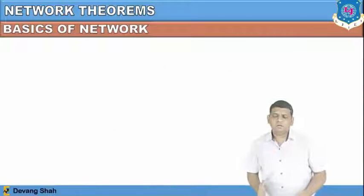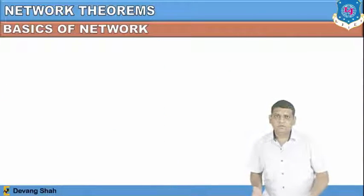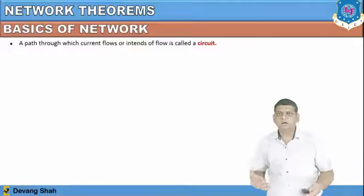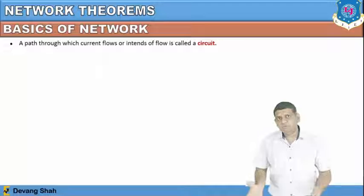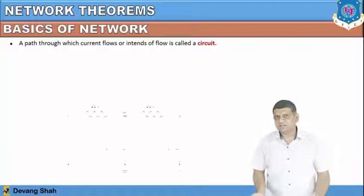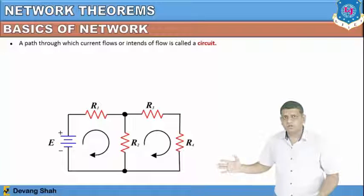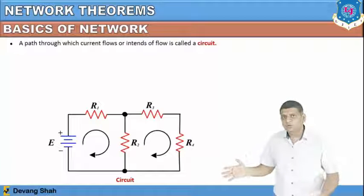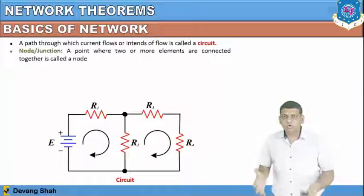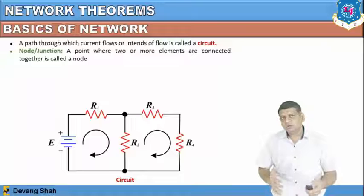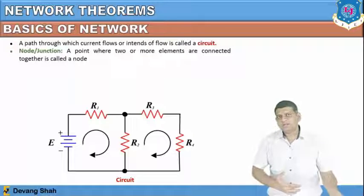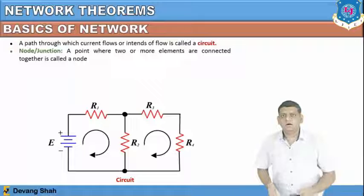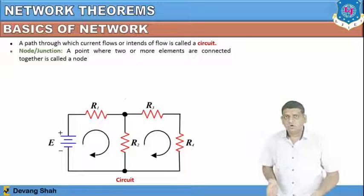Now let's review the basics of electrical engineering. What is a circuit? The path through which current flows or is intended to flow is defined as a circuit. What is a node? A junction where three or more branches are connected, or where two or more elements are connected, is defined as a node.